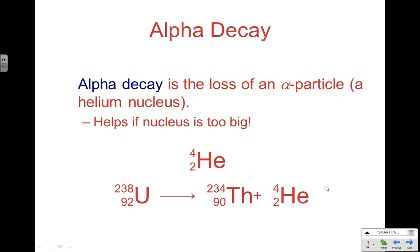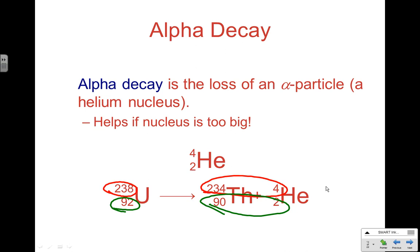Balancing nuclear reactions is a little different than balancing regular reactions. We must ensure the total mass numbers balance and the total atomic numbers balance. For uranium-238 decaying to thorium-234 plus an alpha particle: 238 on the left, 234 and 4 on the right — they balance. Atomic numbers: 92 on the left, 90 plus 2 is 92 on the right. So when balancing nuclear reactions, it's all about balancing atomic numbers and mass numbers on both sides of the equation.